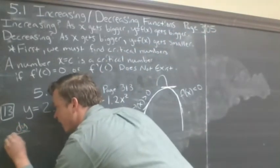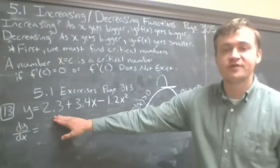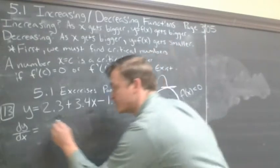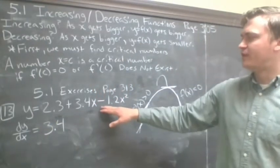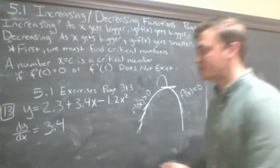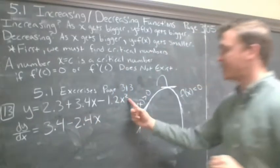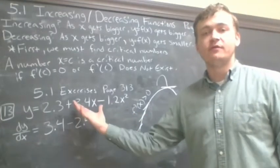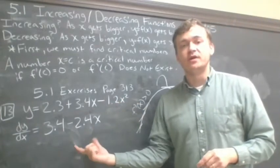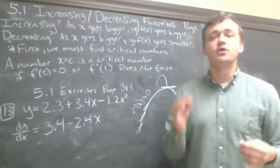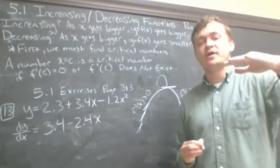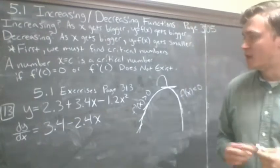Let's first take the derivative. The first term is a constant, so it goes away. For 3.4x, the derivative is just 3.4. For −1.2x², we take the exponent and multiply: −1.2 times 2 is −2.4, and subtracting 1 from the exponent gives us x. So the derivative is 3.4 − 2.4x. Keep in mind: the derivative of a quadratic is linear, the derivative of a linear is a constant, and the derivative of a constant is always zero.